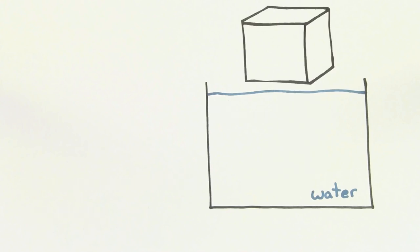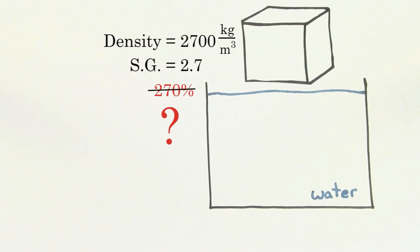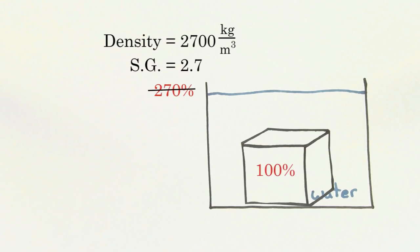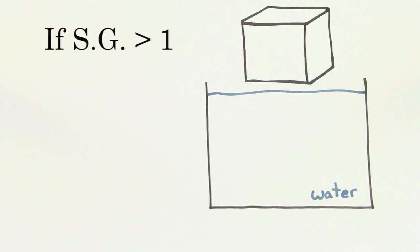But what if we were to use a cube that had a density of 2700 kilograms per meter cubed? The specific gravity would be 2.7, which means that 270% of this cube would be submerged beneath the water. But you can't have more than 100% of an object submerged. Even if the object were to sink, the maximum amount submerged would be 100%.